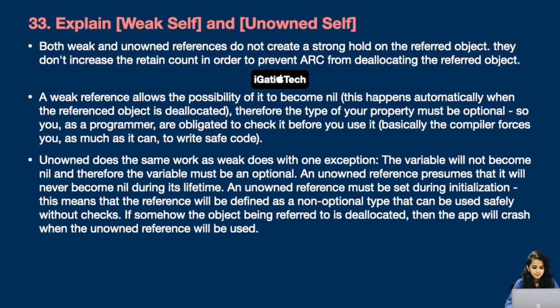Next, explain weak self and unowned self. Both weak and unowned references do not create a strong hold on the referred object — they don't increase the retain count. A weak reference allows the possibility of it becoming nil. This happens automatically when the referenced object is deallocated. Therefore, the type of your property must be optional, so you as a programmer are obligated to check it before you use it.